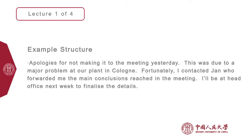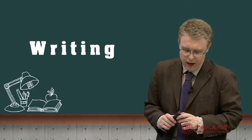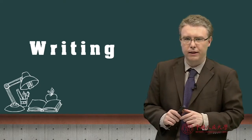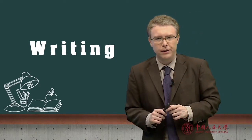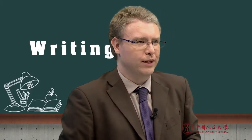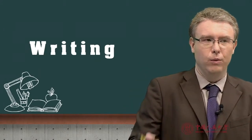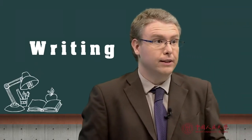Have a look at this: 'Apologies for not making it to the meeting yesterday. This was due to a major problem at our plant in Cologne. Fortunately, I contacted Jan who forwarded me the main conclusions reached in the meeting. I'll be at head office next week to finalise the details.' This is, of course, a problem-solution structure. The problem was a major issue at the plant — she wasn't able to make the meeting. The solution was contacting Jan and being available next week to finalise the details.